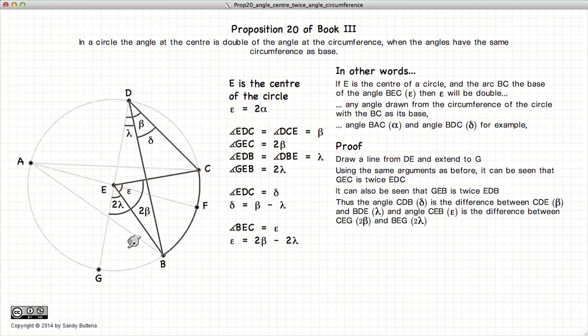So now if we look at all the angles that we have defined, the angles that we are interested in, BDC and BEC. So this angle here, delta, is equal to beta minus lambda. This angle here, epsilon, is equal to 2 beta minus 2 lambda.